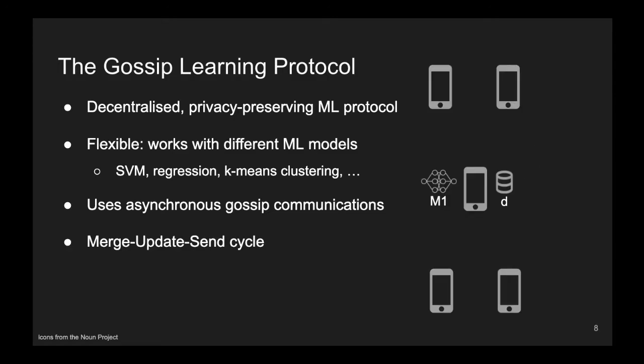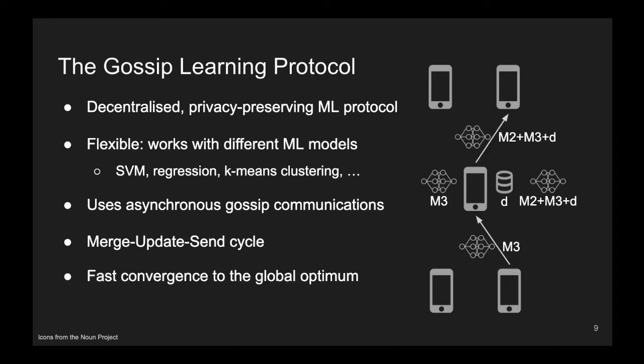More precisely, each node executes a merge-update-send cycle, where, once receiving a model from a neighbor, the node produces an aggregate model and trains this aggregate model on the data stored locally, before sending it to another random peer. This process is repeated continuously, leading to each model performing a random walk over the network, and getting to learn new data and being updated with knowledge from other models at every step. This leads to a very fast convergence speed to the global optimum.